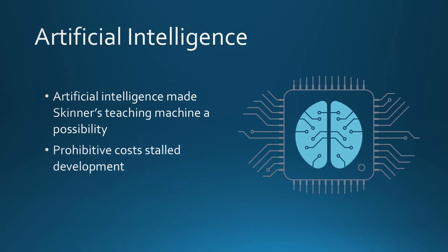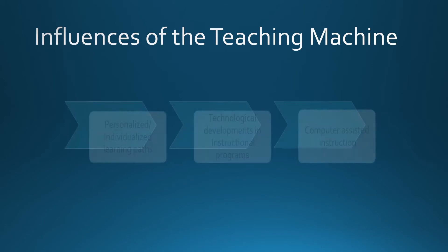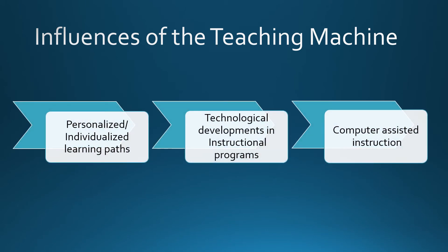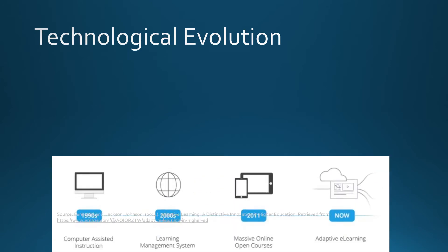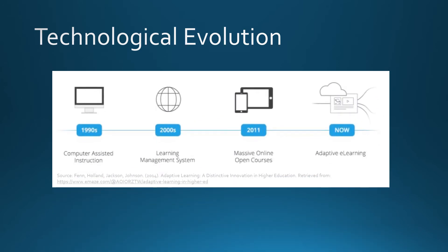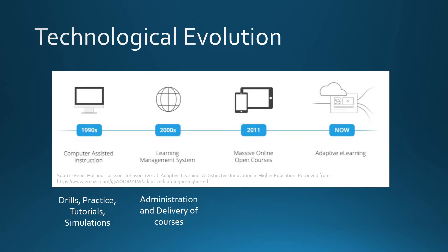During the early days of AI, however, prohibitive costs stalled the development of adaptive learning platforms for another decade. The teaching machine restarted ideas about personalized and individualized learning while also influencing technological developments in instructional programs and computer-assisted instruction. In the decades after the introduction of AI, educational technologies continuously transformed. Computer-aided instruction emerged in the 1990s and offered drills and practices, tutorials, and simulation activities.